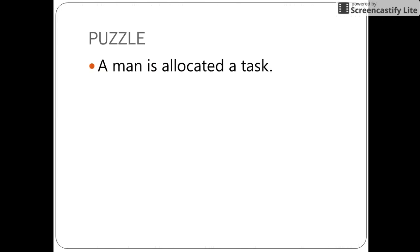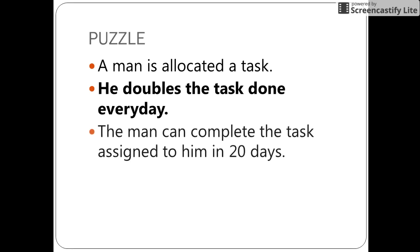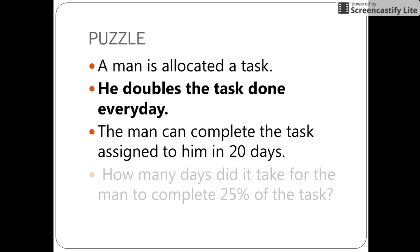In this puzzle, there is a man who is allocated a task. This person works in such a way that he doubles the task done by him every day. It is also known that the man can complete the assigned task to him in 20 days. So, can you find how many days did it take for the man to complete 25% of the task?